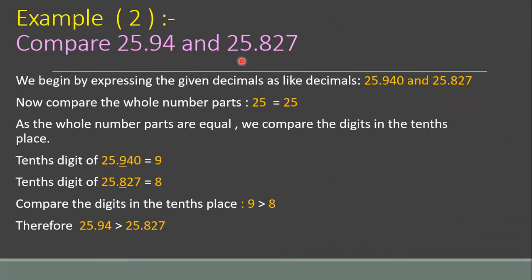Now, example two: what if the whole number parts are equal but the decimal parts are different? We begin by expressing the given decimals as like decimals. After the decimal we have three places in one and two in the other, so we add a zero to get 25.940 and 25.827. First compare the whole number parts — both are 25, so they are equal. Since the whole number parts are equal, we compare the digits in the tenths place, which is the very next digit after the decimal.